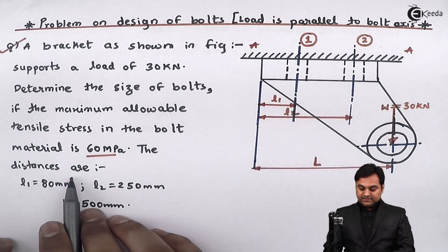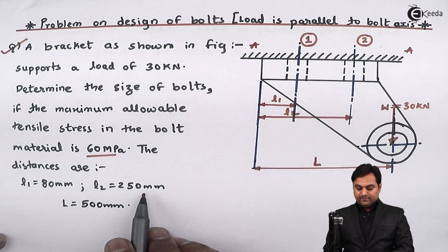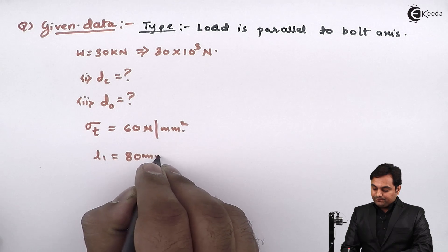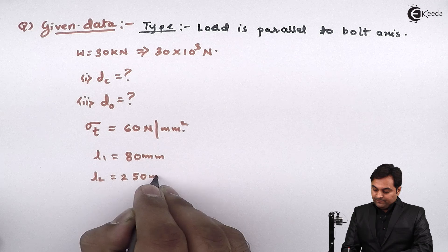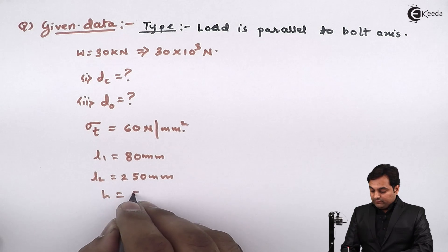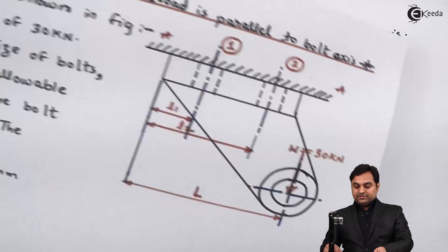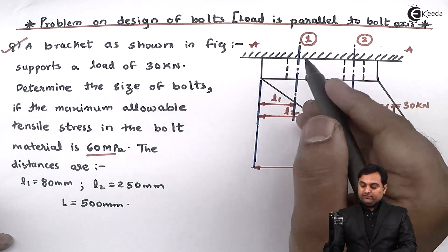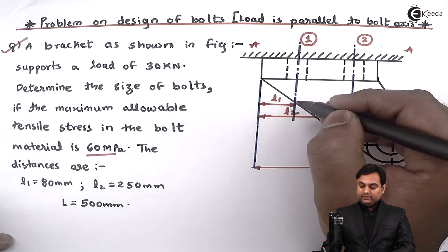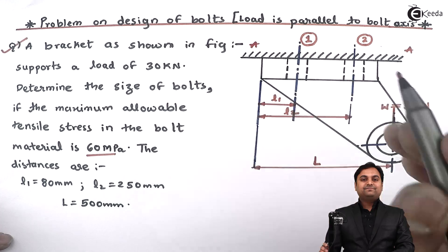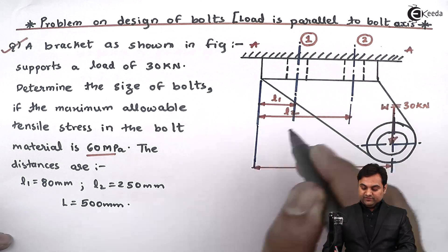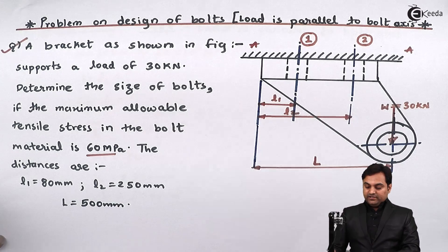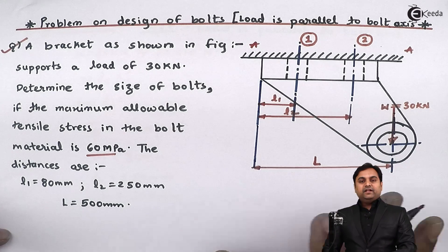The distances are: l1 = 80 mm, l2 = 250 mm, and capital L = 500 mm. These distances are shown in the diagram. Section 1 or center line 1 has bolts at distance l1 = 80 mm from the fixed edge. For bolt axis 2, the distance from the fixed edge is 250 mm, and the distance between the fixed edge and the load, capital L, equals 500 mm.